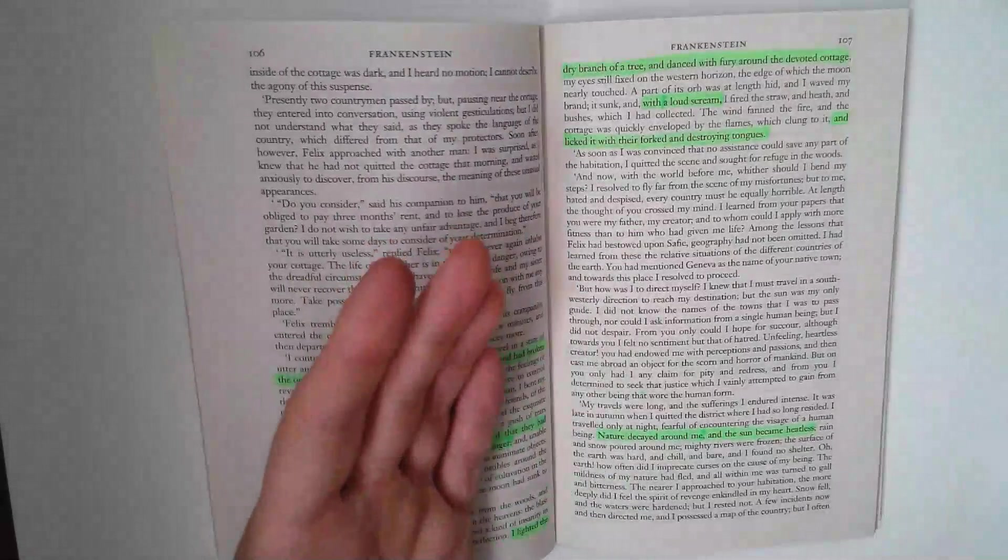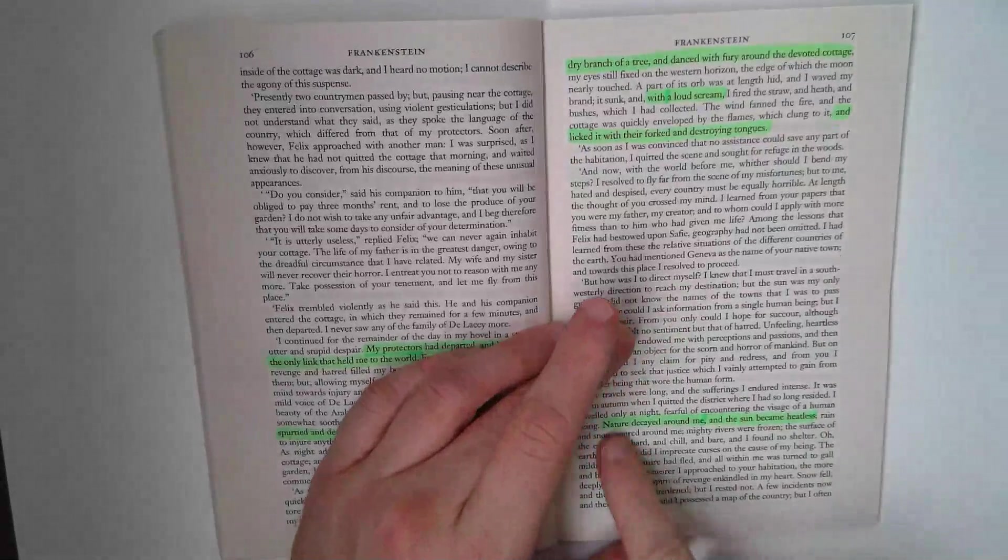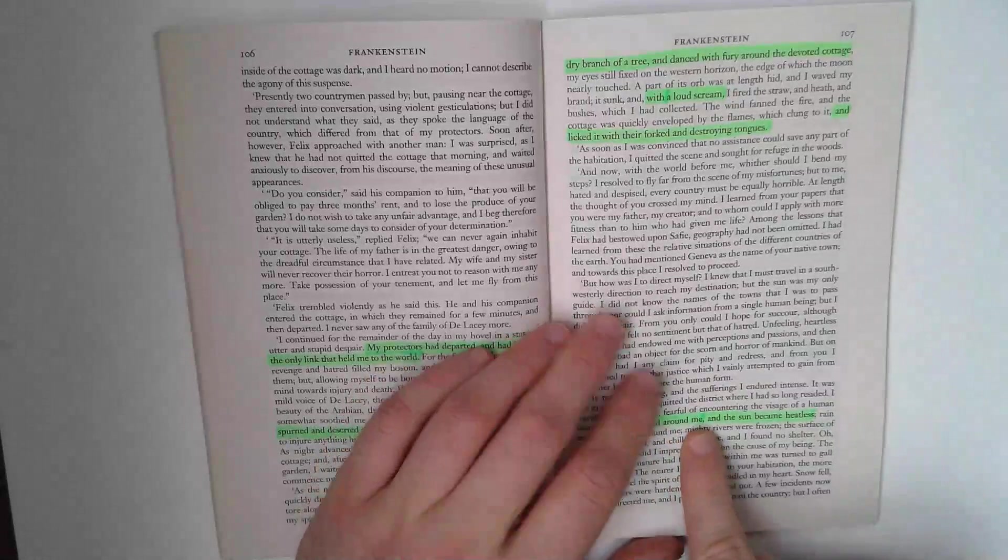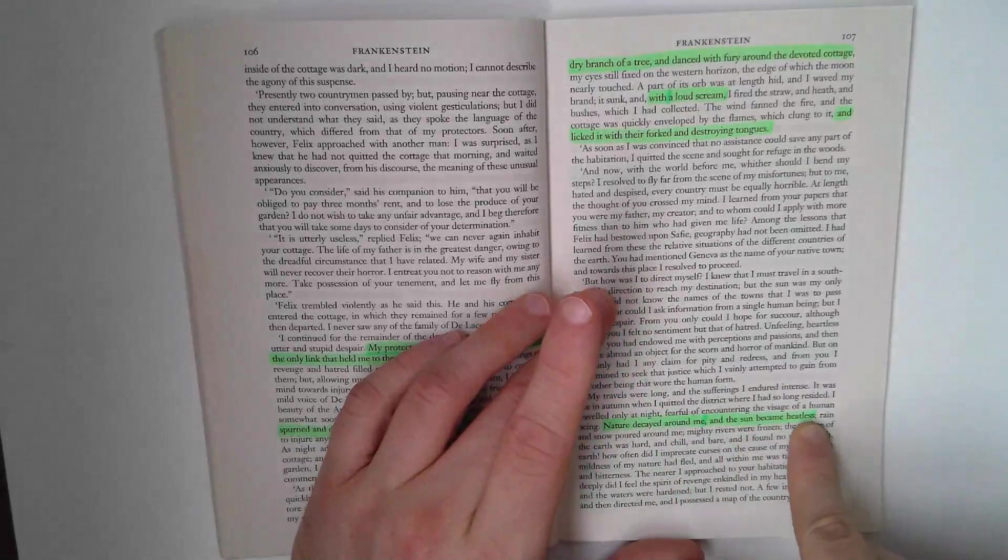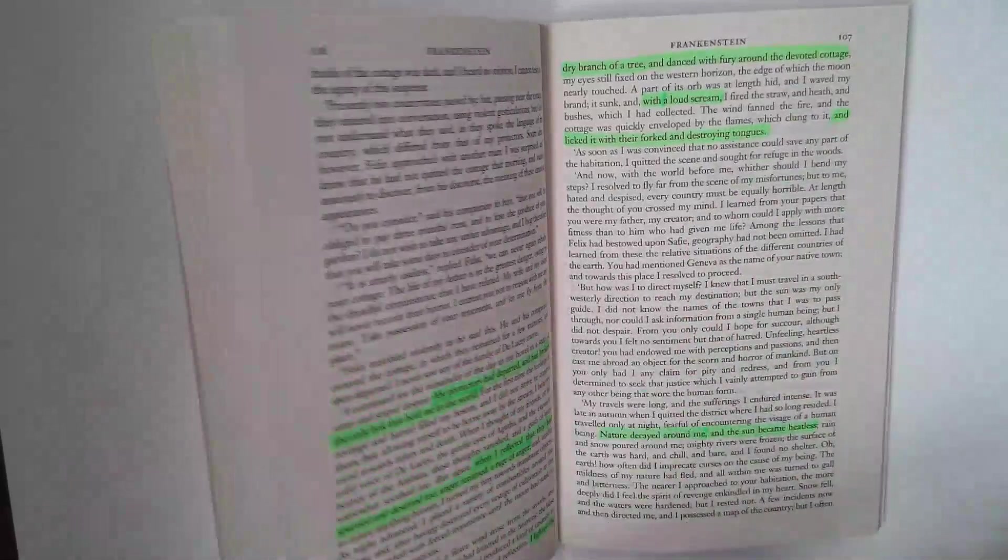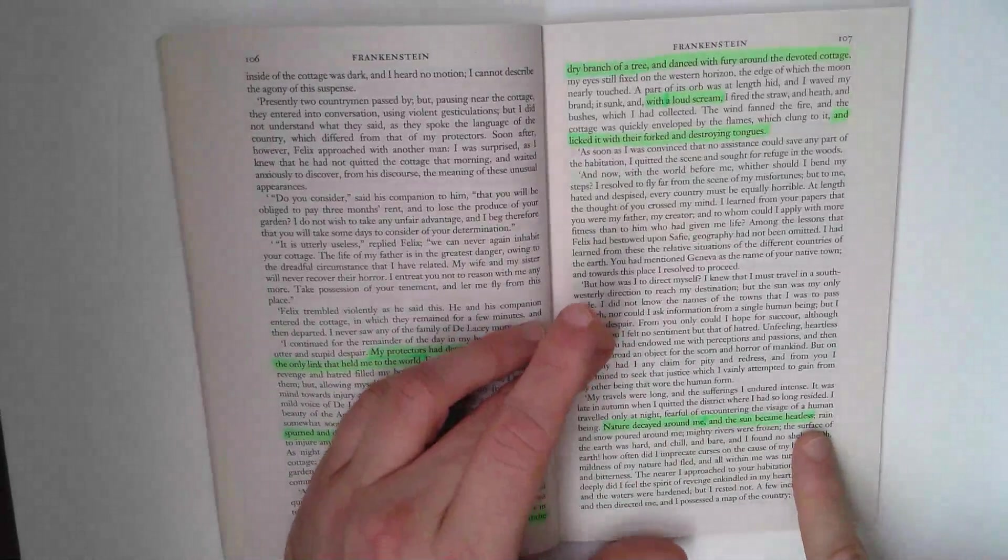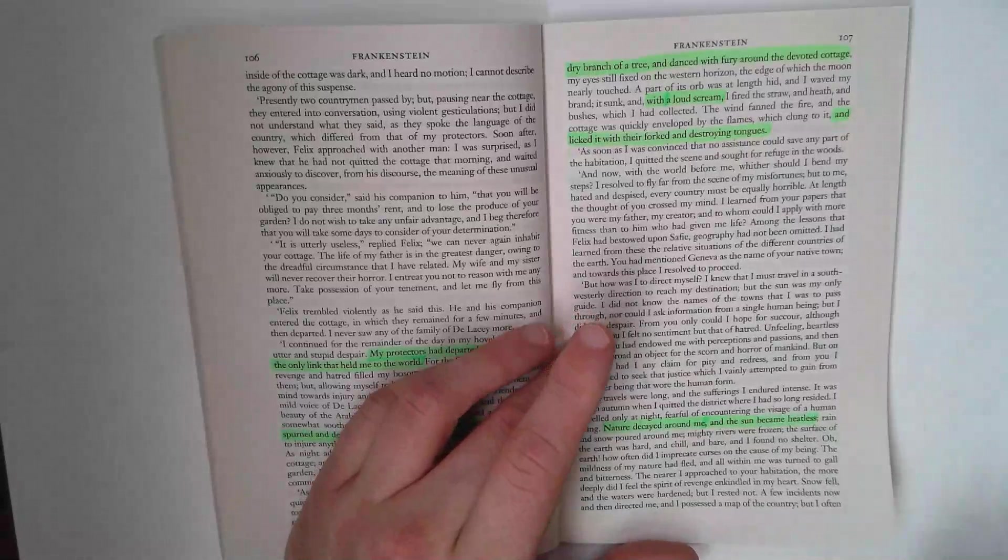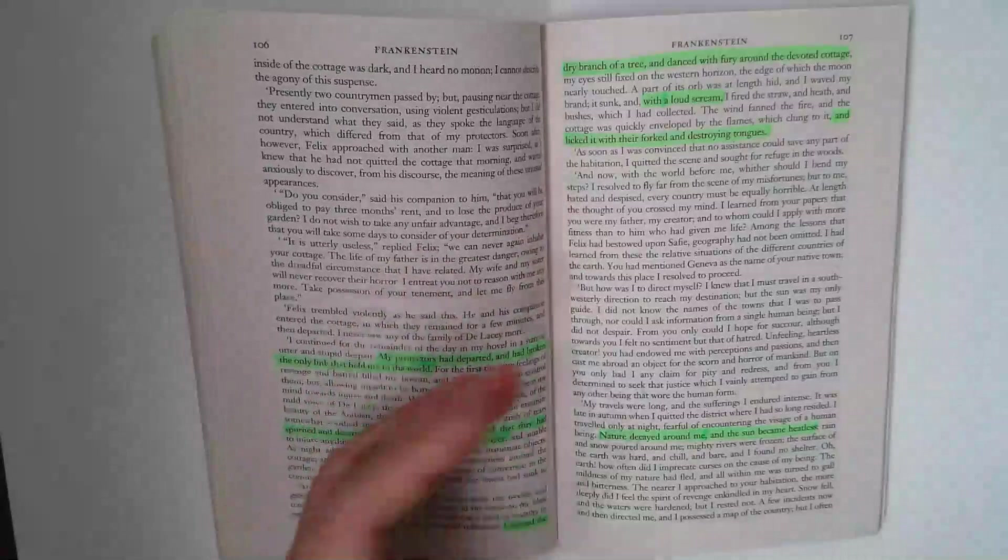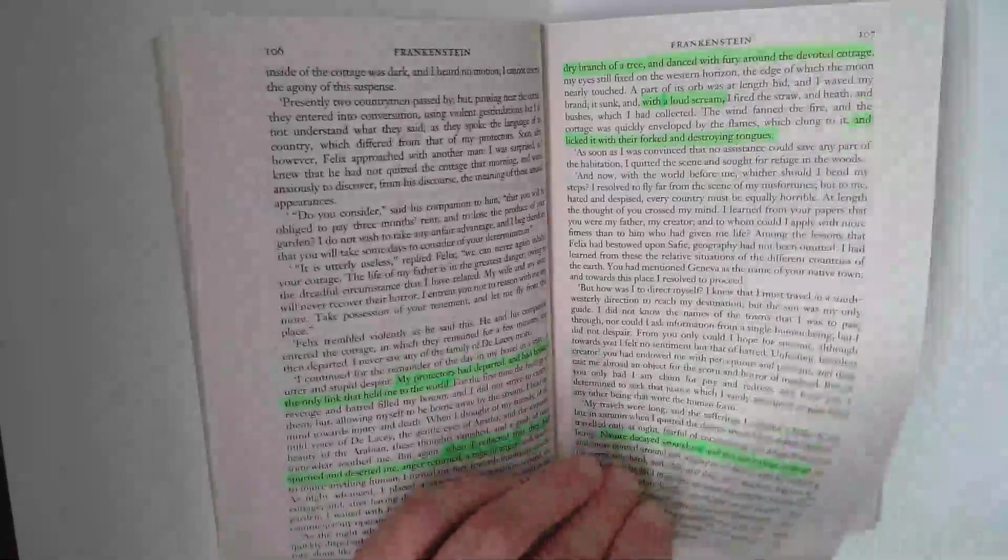And then of course the creature has nothing to live for. He looks in the diary and returns then to Geneva to find Frankenstein. And as he walks, he goes up to the mountains. And nature decayed around me and the sun became heatless. This idea that, when we went back to chapter 11, we saw Mother Nature restoring the creature. Even nature can't bring him any sympathy. Nature can't bring him any comfort. Potentially that romantic movement, this idea that nature decaying is reflecting the creature's feelings of anger and aggression.